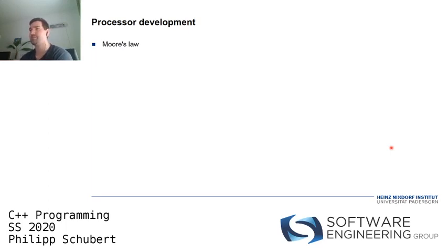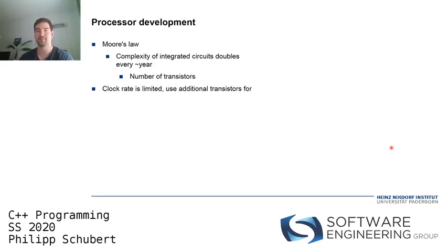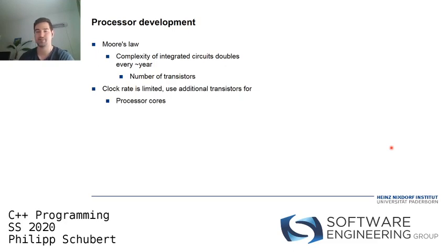Let's talk about processor development. There is a thing called Moore's Law, which states that the complexity of integrated circuits — basically the number of transistors — doubles every year. But the clock rate is limited. How can we use the additional transistors? You can increase the number of processor cores; we already have processors with a huge number of CPU cores. We can build more CPU cores on that chip with a limited clock rate and use the additional transistors for that.